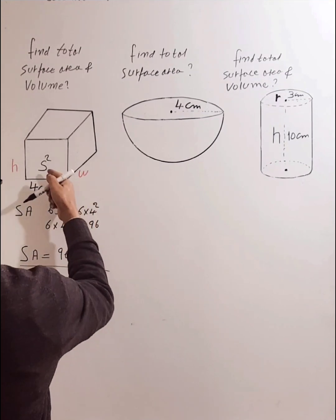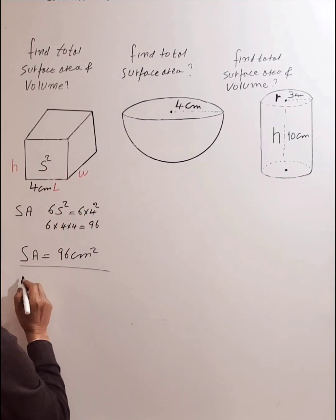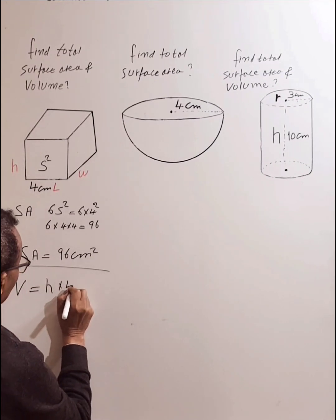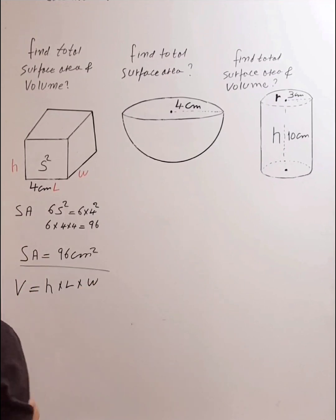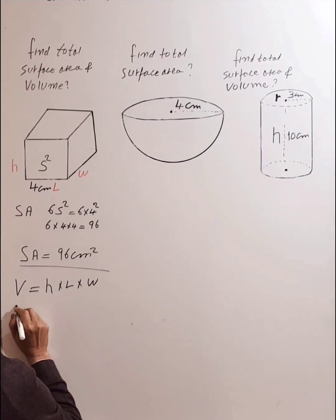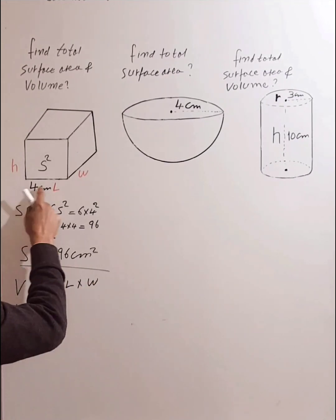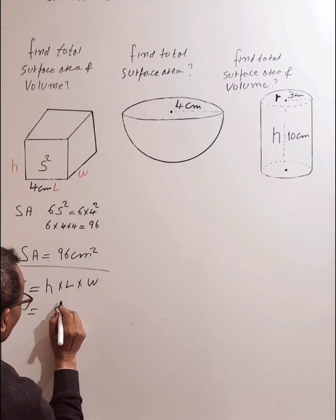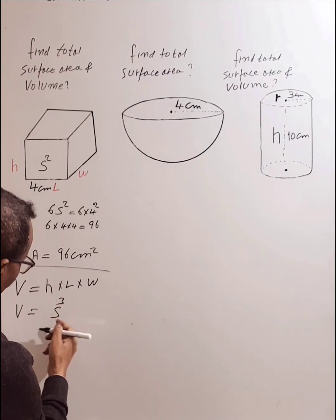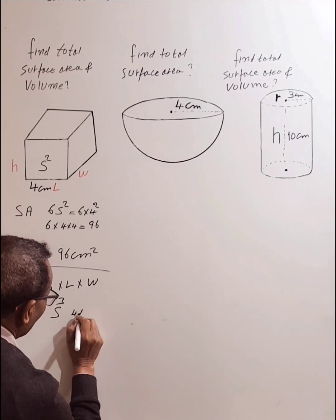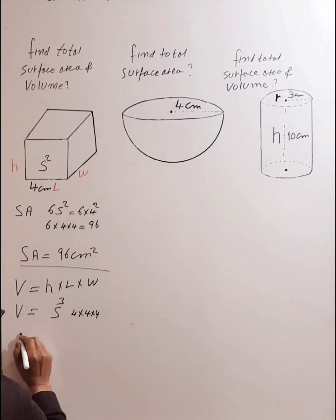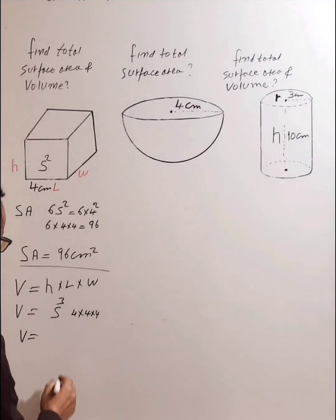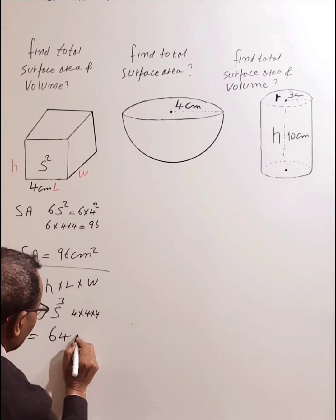Now let's find the volume of the cube. The formula for the volume of a cube is height × length × width. Since all sides are equal, this simplifies to s³. With s = 4: 4 × 4 × 4 = 64. So the volume of the cube is 64 cm³.